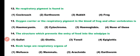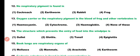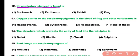Question number 12. No respiratory pigment is found in: cockroach, earthworm, rabbit, or frog. Correct answer is option 1. There is no respiratory pigment found in cockroach because cockroach blood has no red blood cells to carry oxygen.